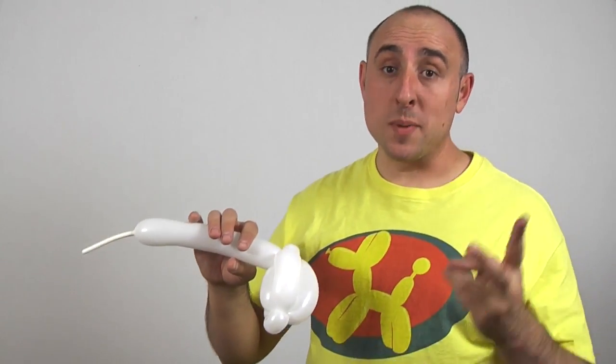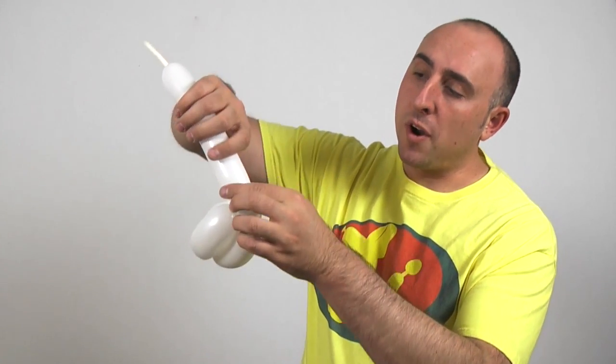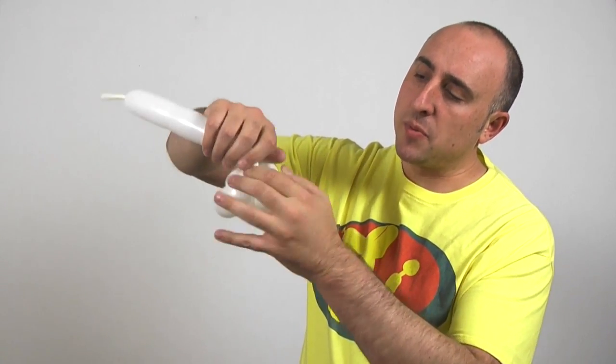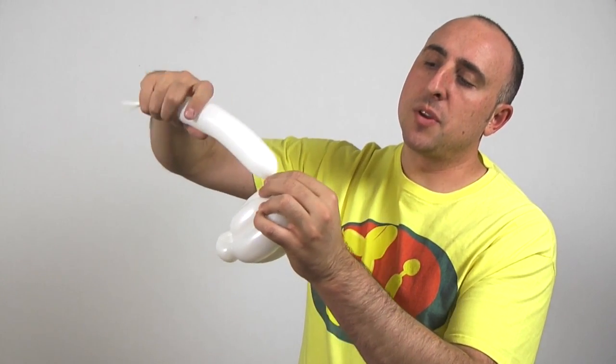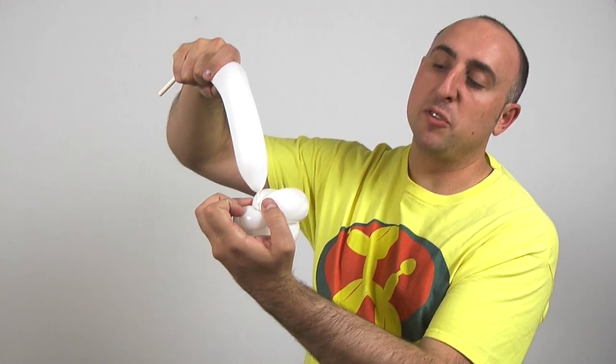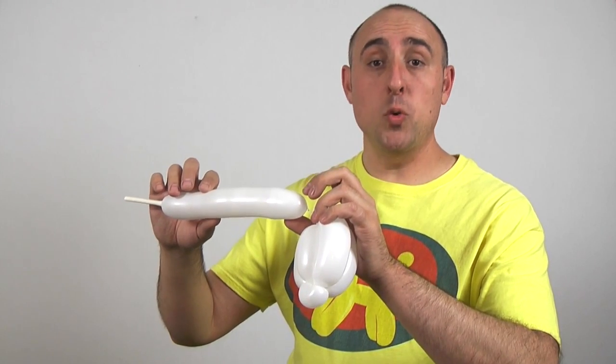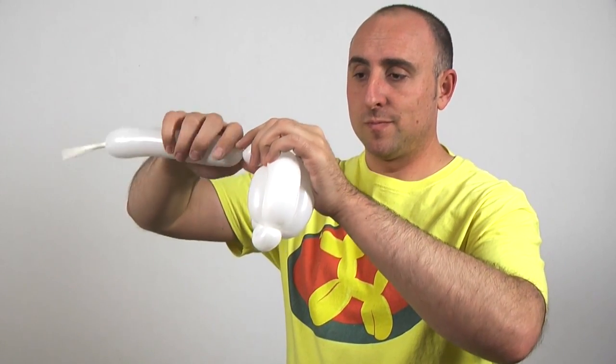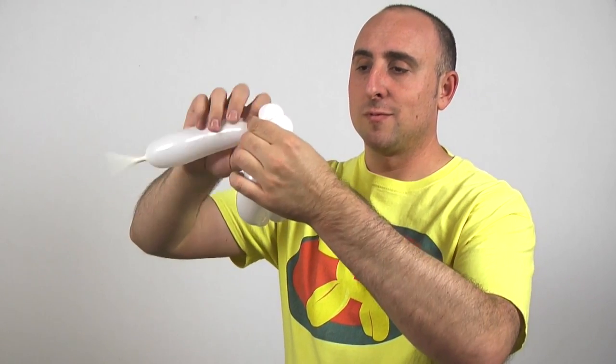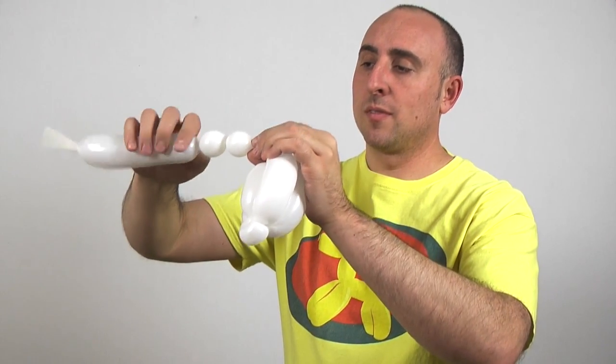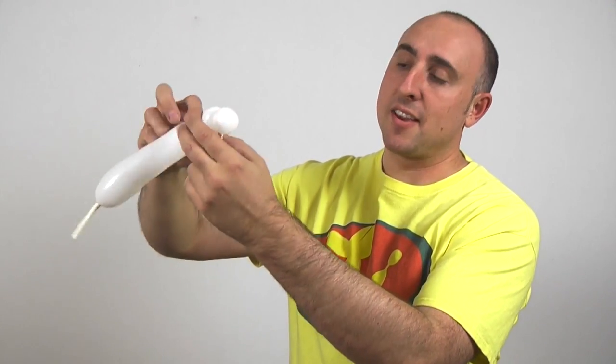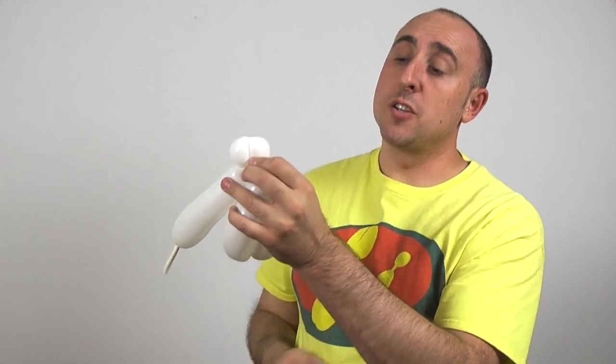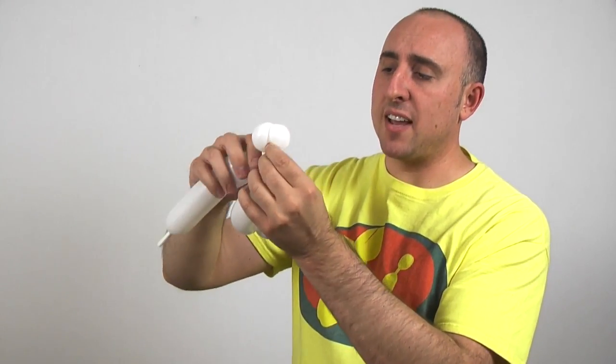The next thing we want to do is make the eyes of our sheep. So what we want to do is give this a squeeze so we get a little bit of slack in there. Not much. But go ahead and twist a nice amount there. So we can push that air back down. But it's not fully inflated. Next we want to make two one inch bubbles.